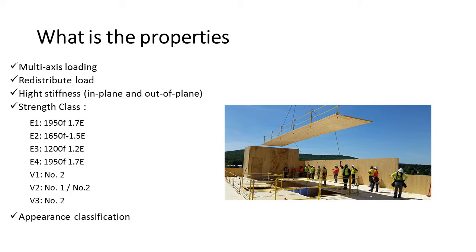There are seven strength classes for CLT. These stress classes were developed based on lumber species and grades available in North America. For example, the E1 strength class is made with spruce-pine-fir lumber in all parallel layers, and number 3 spruce-pine-fir lumber in all perpendicular layers.